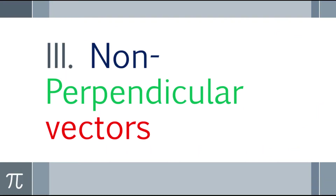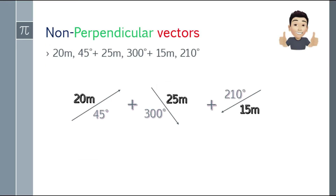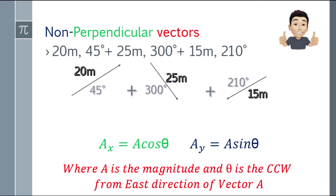Alright, next: how about non-perpendicular vectors? For example: 20 meters at 45 degrees, plus 25 meters at 300 degrees, plus 15 meters at 210 degrees. The technique here is to find the x and y axis components. To solve that, ax = a cosine theta, and ay = a sine theta, where a is the magnitude and theta is the CCW angle from east.